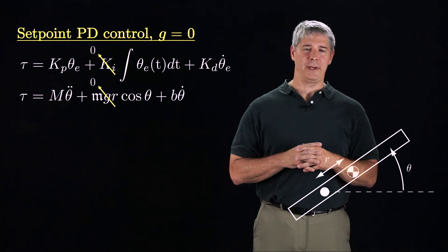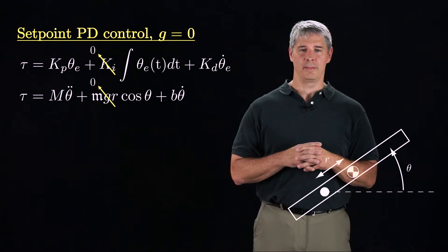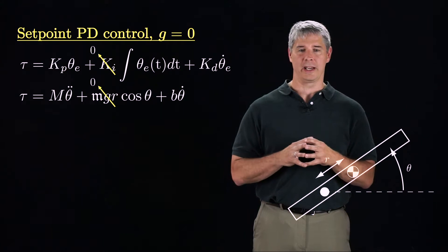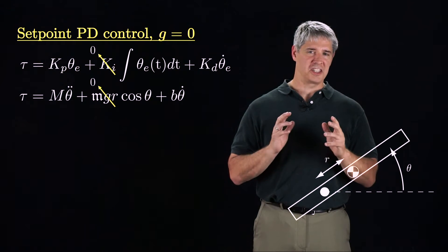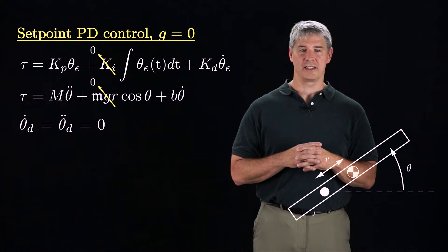Let's begin by studying PD control for the case where gravity is equal to zero, perhaps because the link is in a horizontal plane. Let's also focus on set point control, where the desired joint position is constant.